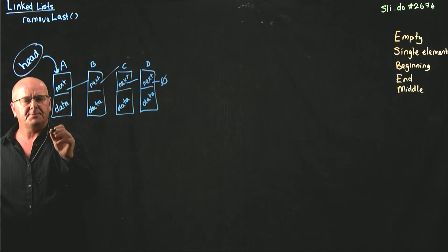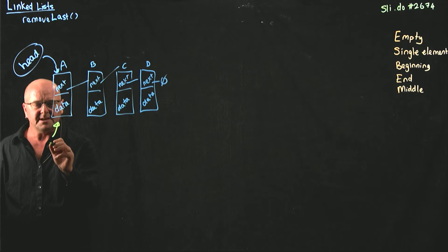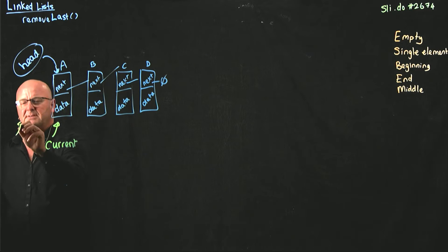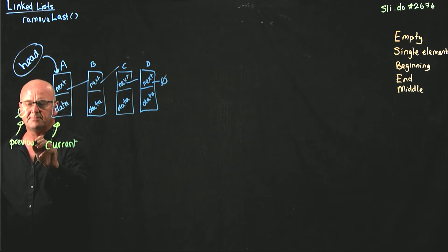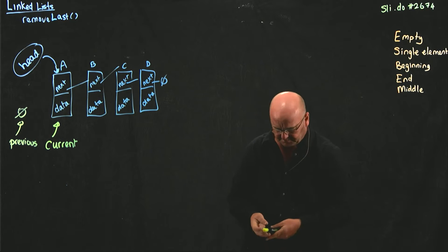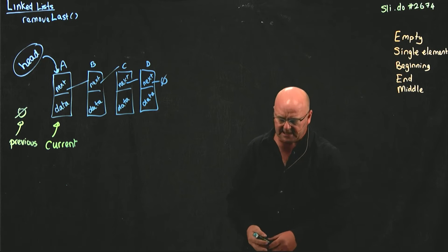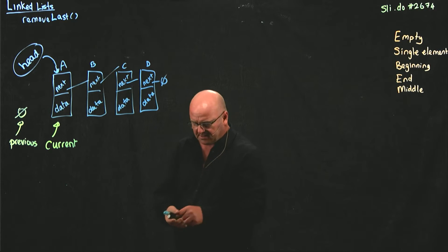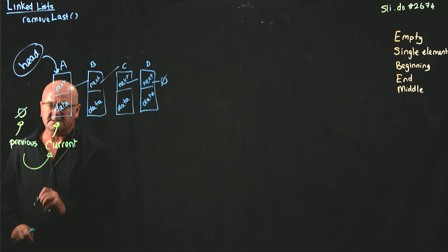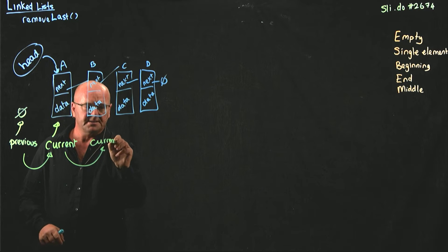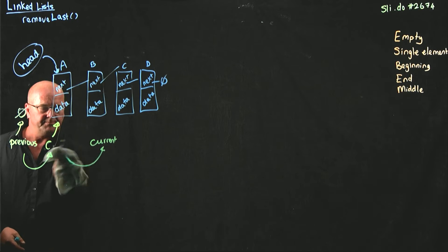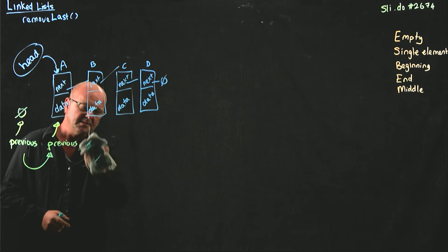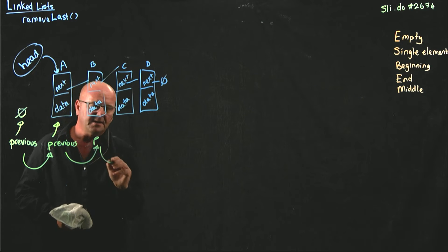The first one is going to be called current and is going to point to head. The second one is going to be called previous, and when we start off it's going to point to null. So I'm going to have one called current that starts pointing at head and one called previous that starts pointing at null. As I go through my list, what I want to do is set previous to current, and then set current to current.next.